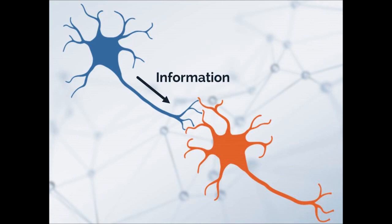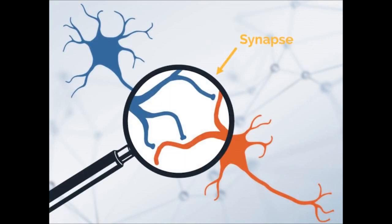This cartoon illustrates the flow of information between two neurons. If we take a closer look at the junctions between these two neurons, we'll notice that there are discrete locations where the two neurons are close enough to communicate. These structures are called synapses. Each neuron has an estimated one thousand to ten thousand synapses, which means that there are a hundred trillion — or one quadrillion — synapses throughout our entire brain.